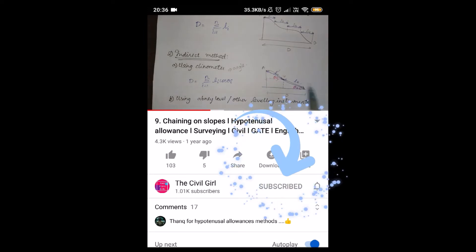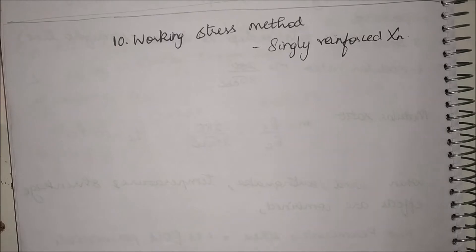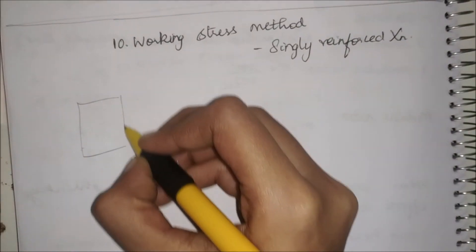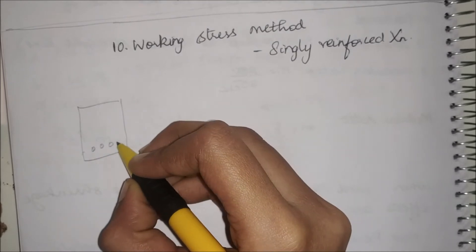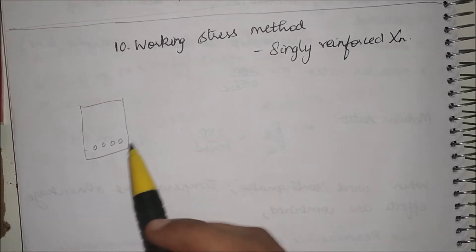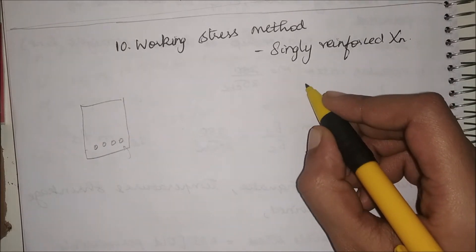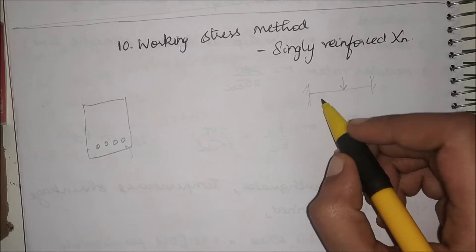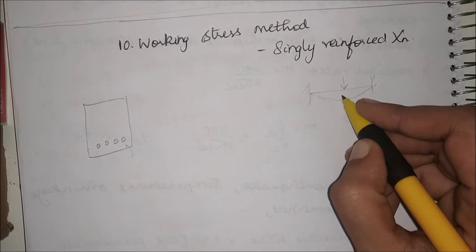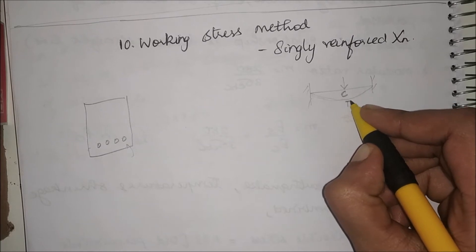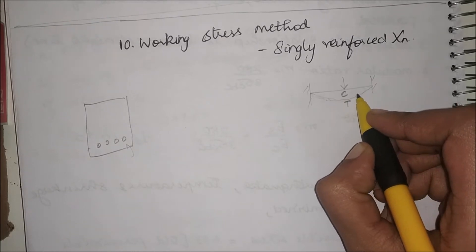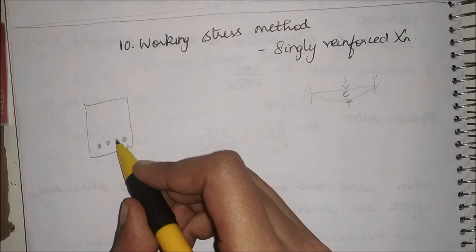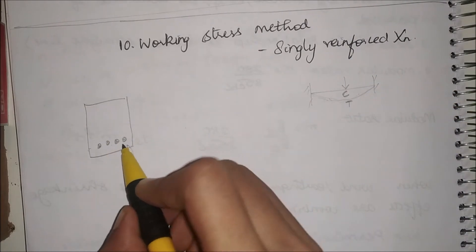Firstly, let us see what is a singly reinforced section. It is a type of beam where we have steel only at the bottom. We provide steel only at the bottom because in a beam under a point load, the top is going to be in compression and the bottom is going to be in tension. So only in the tension side we provide steel.